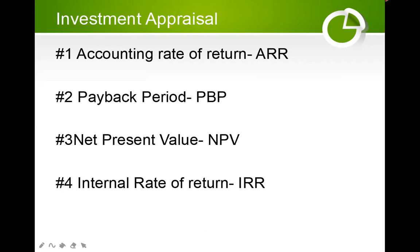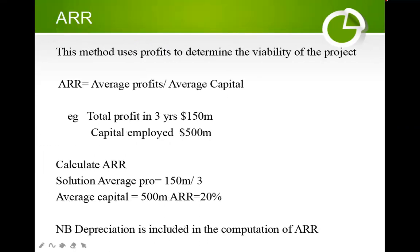Under quantitative methods, we have the accounting rate of return, the payback period, the net present value, and the internal rate of return. Last time we covered that accounting rate of return is a quantitative method that uses profits to determine the viability of a project. The formula uses average profits over average capital employed, where average capital employed is taken to be one half of the initial outlay.